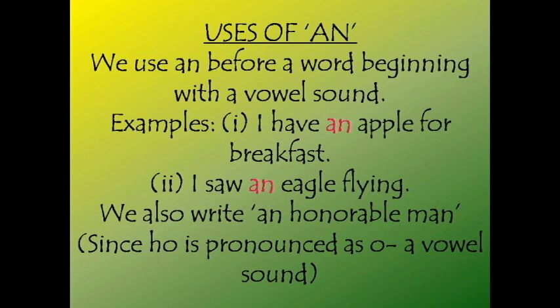We also write 'an honourable man', even though it starts with H, which would normally take a. But we use an because 'honourable' is pronounced as 'onourable' — the H is silent, so the O sound comes, which is a vowel sound. Hence, an is used in this case.